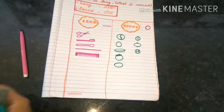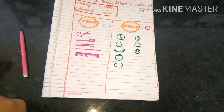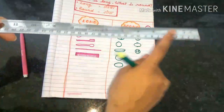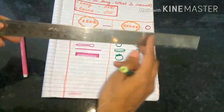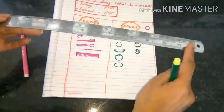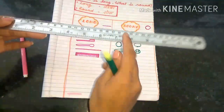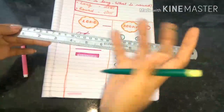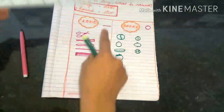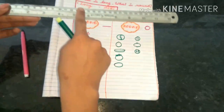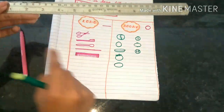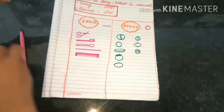The next thing I have is this. This is a ruler. Is it looking long or is it looking round? Long or round? Yes, it is long.